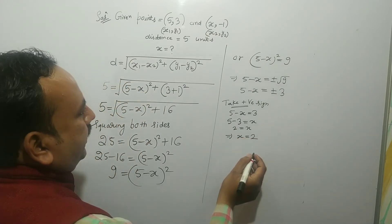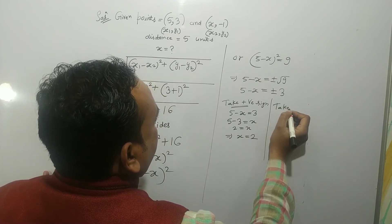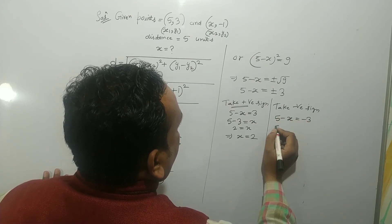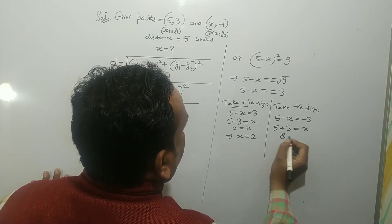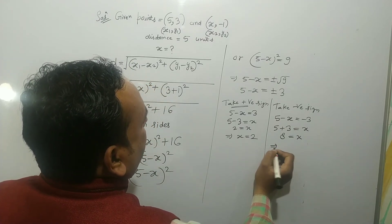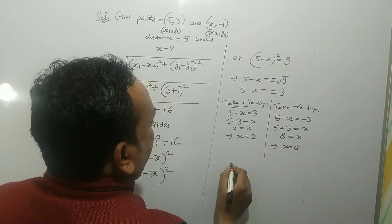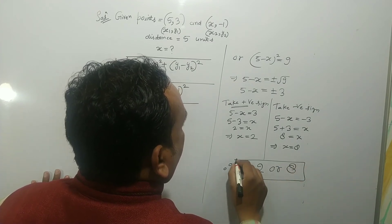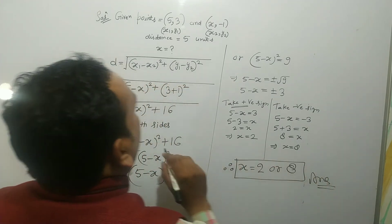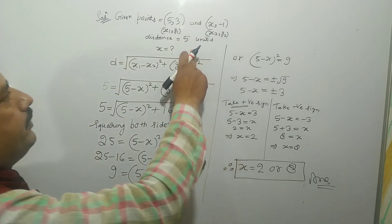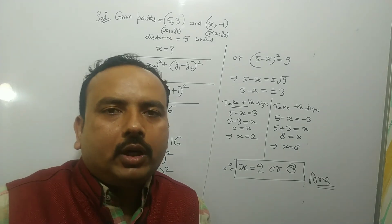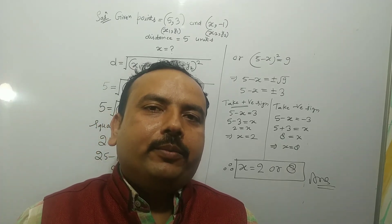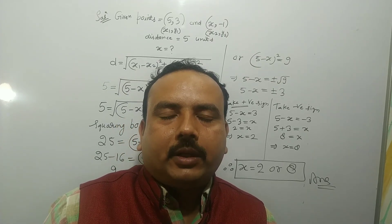Taking the negative sign: 5 − x = −3. By transposition, 5 + 3 = x, so x = 8. Therefore, the value of x is 2 or 8. This is a very important problem — note down the solution. Thank you so much students for watching the video. Please don't forget to like, share, and subscribe to our channel.